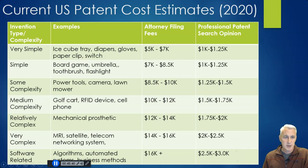And we could go through all of these but you get to high-end complexity, very complex, MRIs, satellites, networking systems. Attorney fees can be 14 to 16 thousand. I've seen more. And again, patent searches also get more expensive.